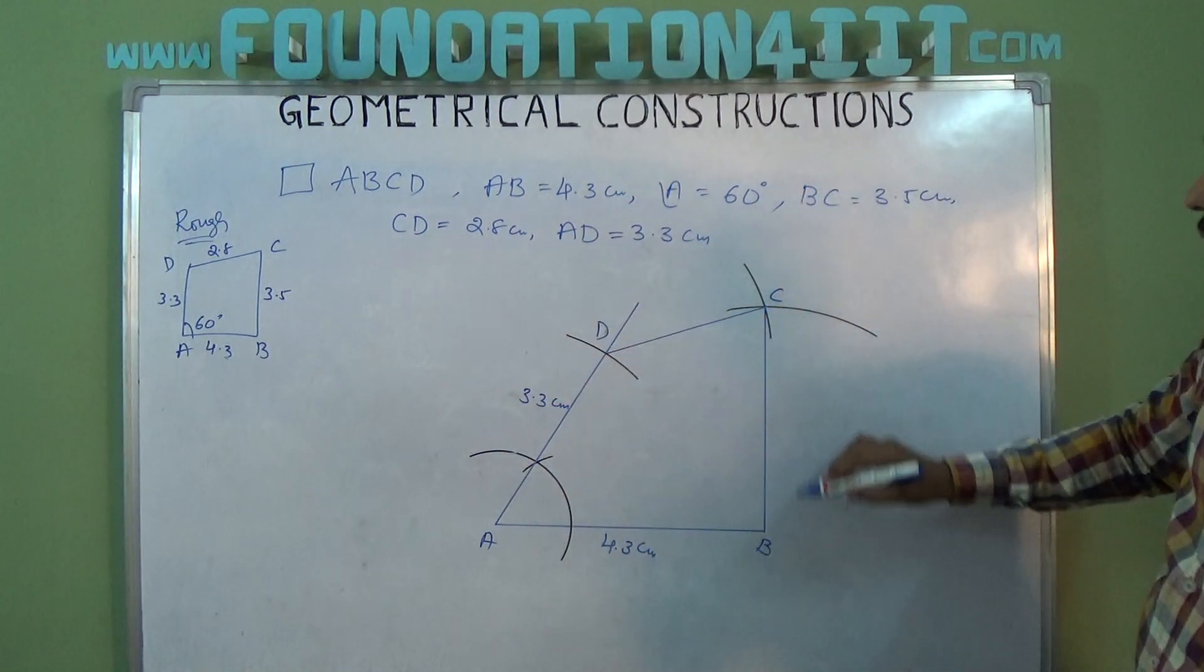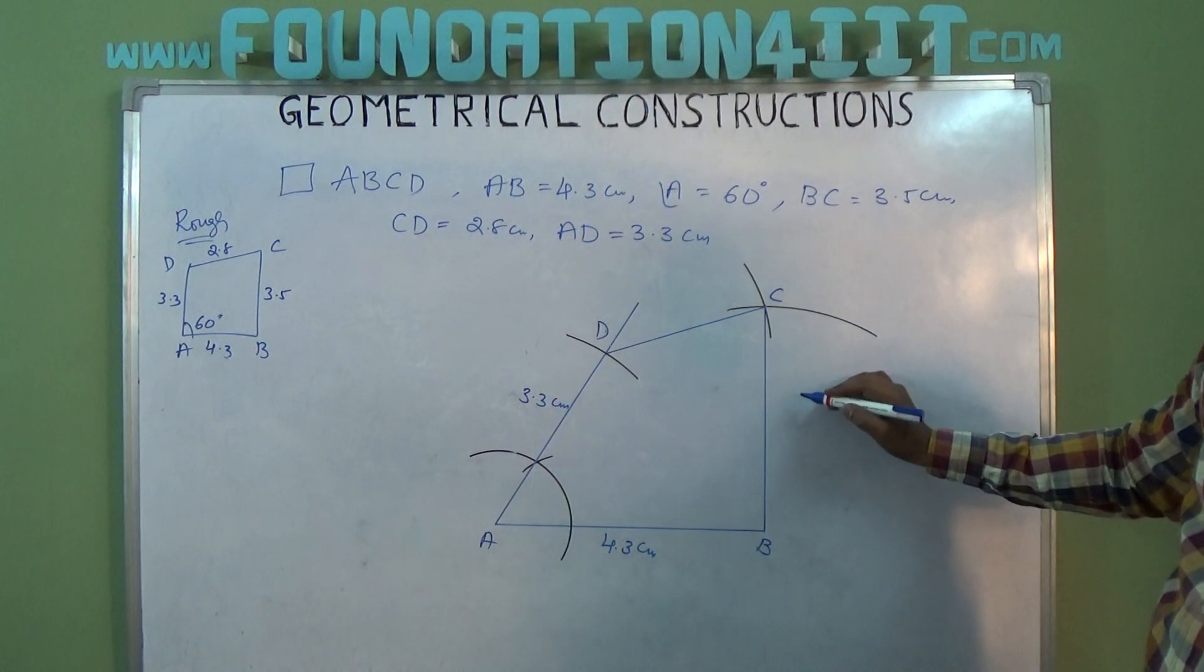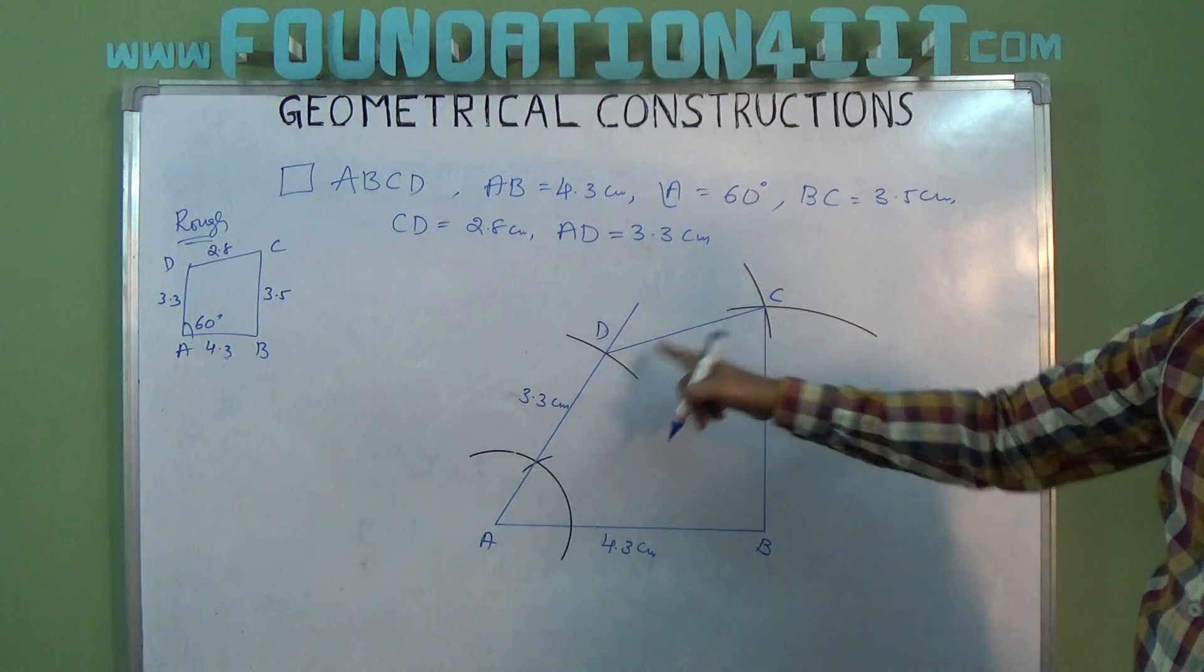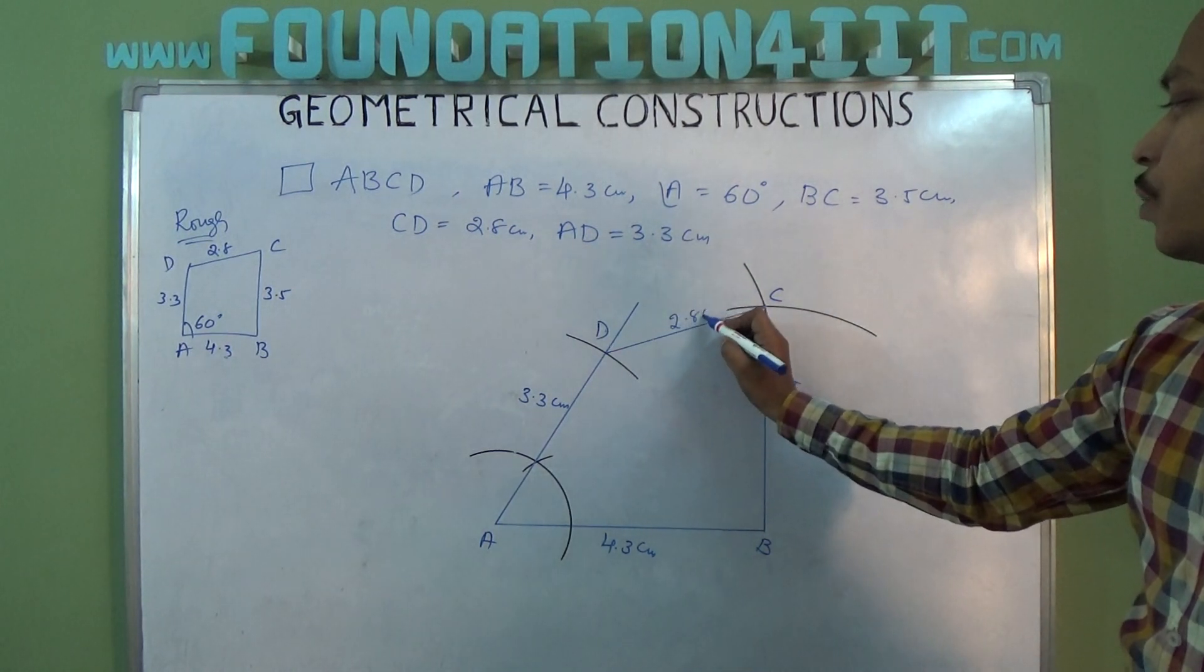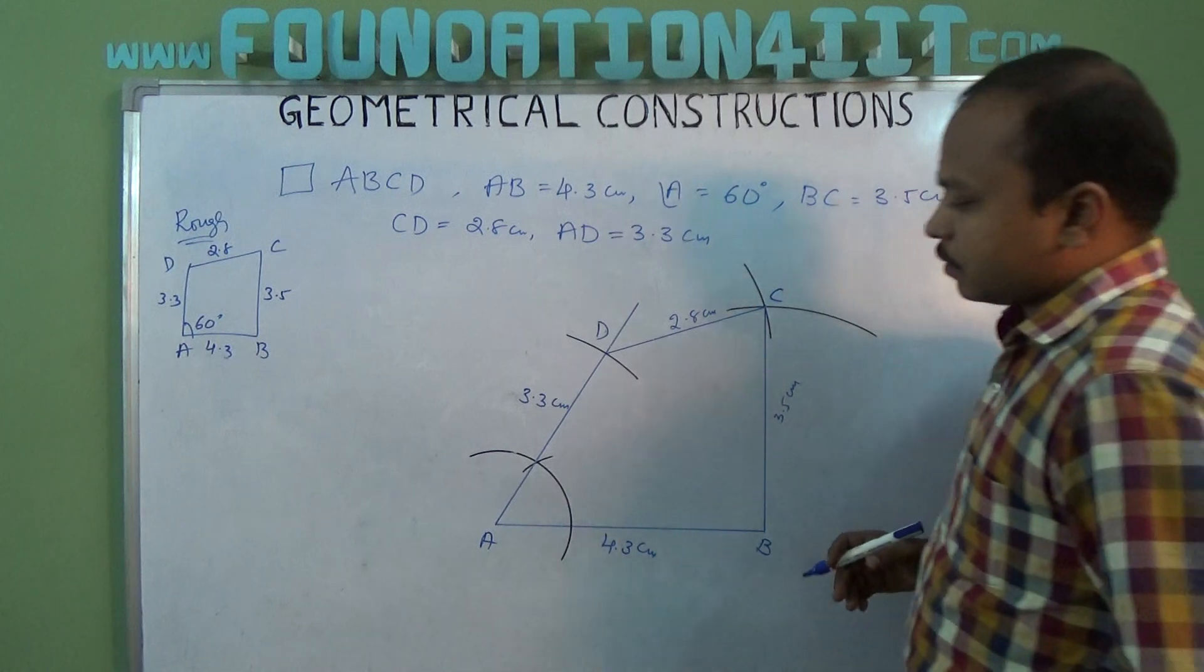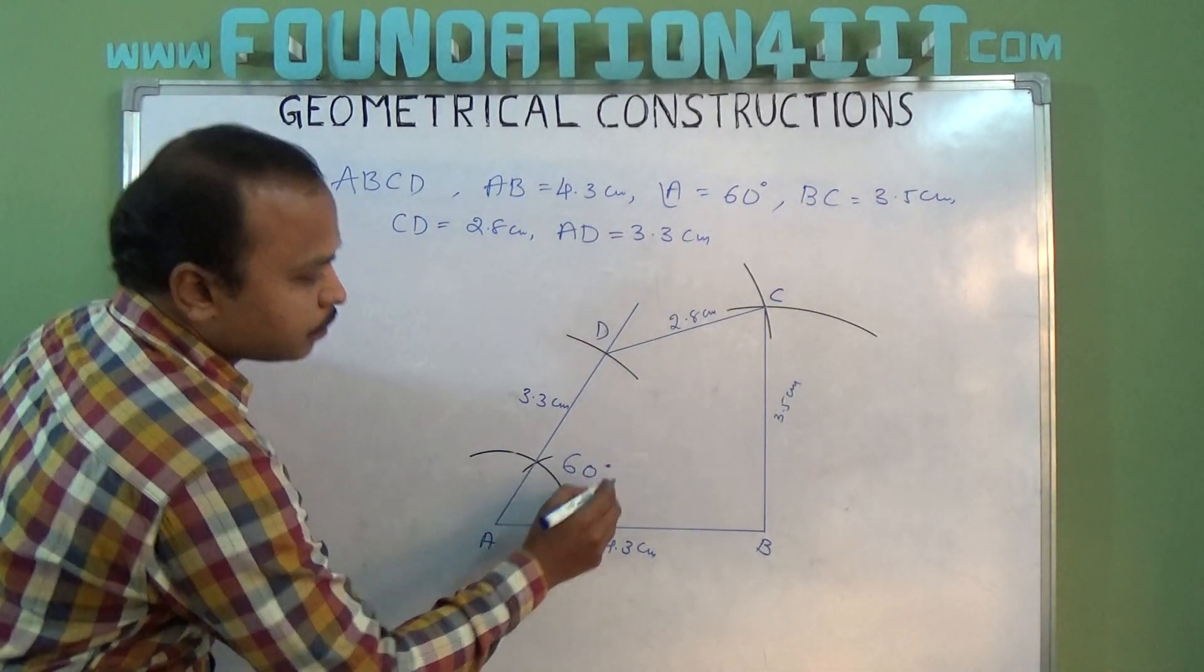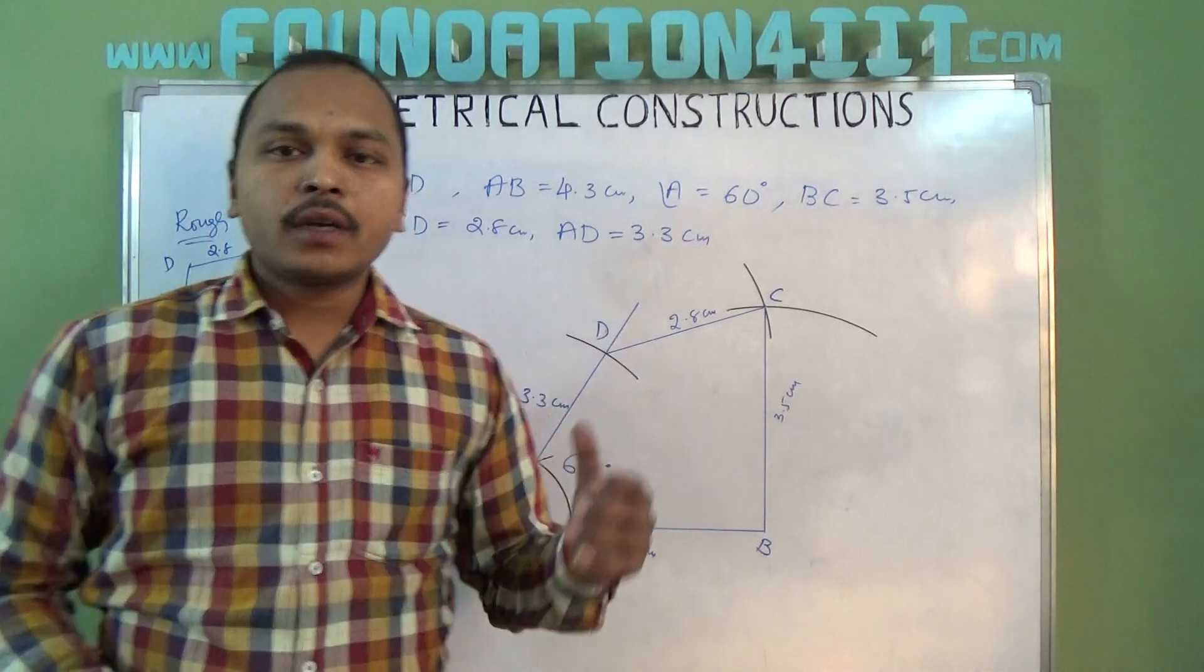Now we can observe B to C is 3.5 centimeters and CD is 2.8 centimeters, and angle A is 60 degrees. According to the given information, we constructed exactly.